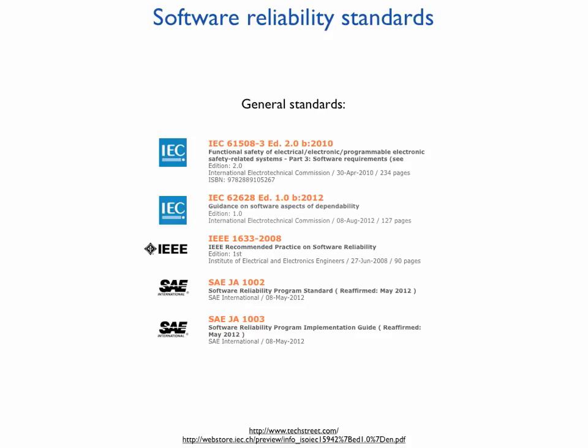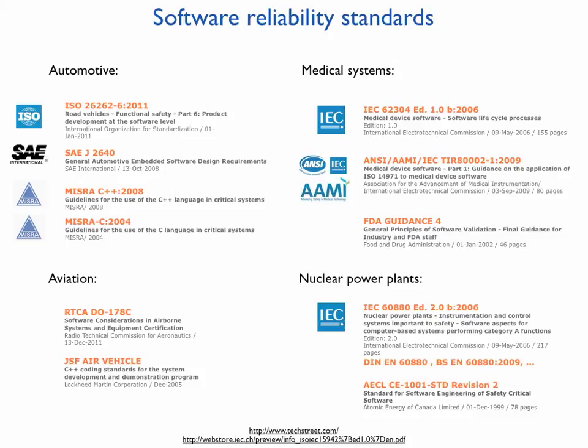In this slide, you can see five general standards that tell us how to develop reliable software. There are two IEC standards, guidance documents, IEEE, and the Society of Automotive Engineers standards. These standards define the software development process, which documents we have to prepare, how we should test, and so on. There are also a number of mandatory standards for each industrial domain, such as automotive, aviation, medical systems, and nuclear power plants.